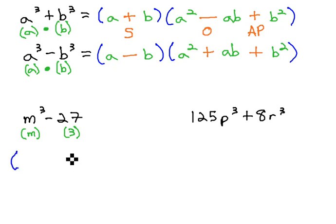Now that I know the roots, I'm ready to build my binomial and trinomial factors. The binomial is easy to fill in with those two roots I just found, m and 3. To fill in the trinomial, we square the first one, m squared, multiply them together, 3m, and then square the last term, 3 squared is 9.